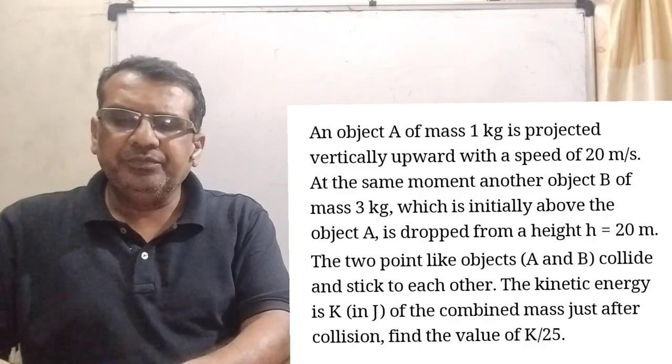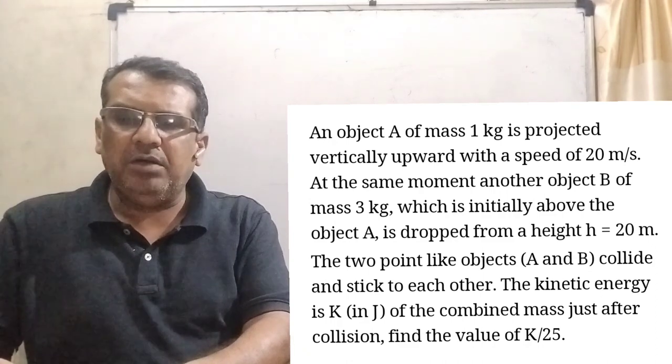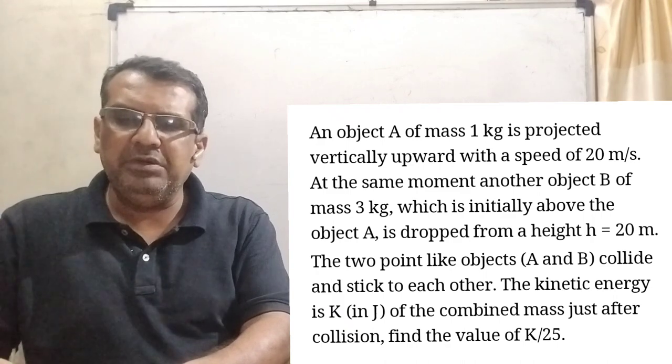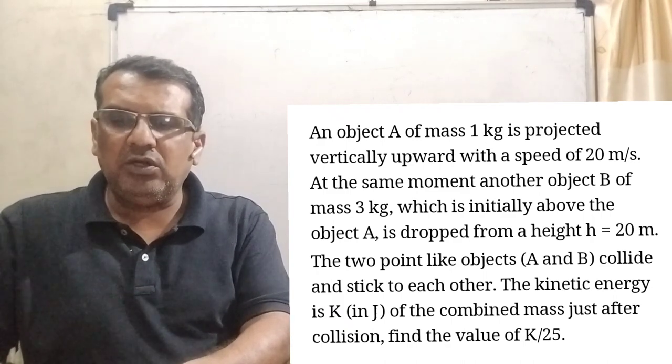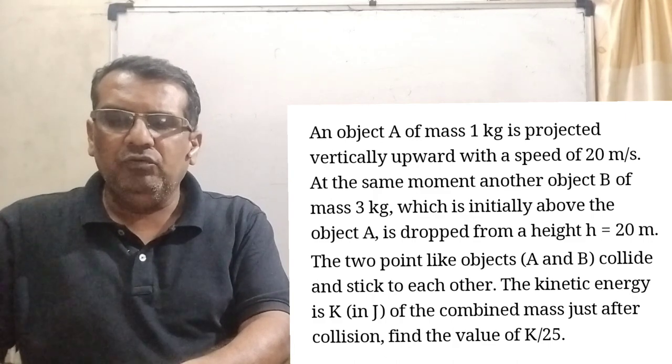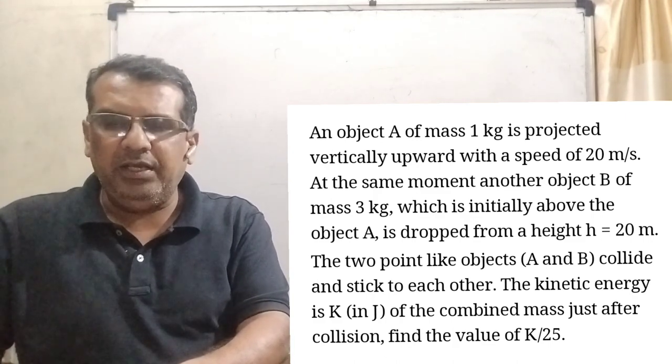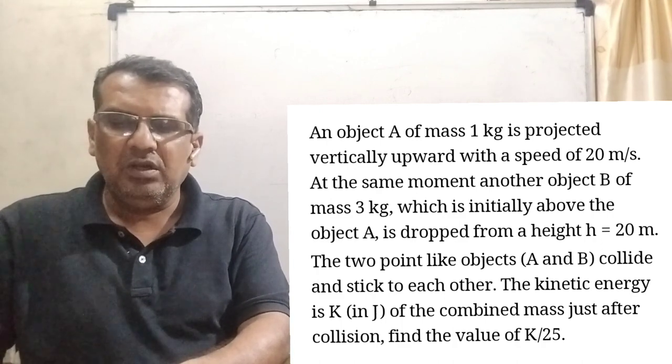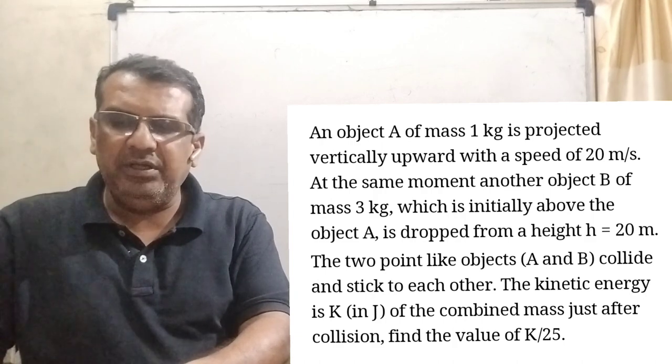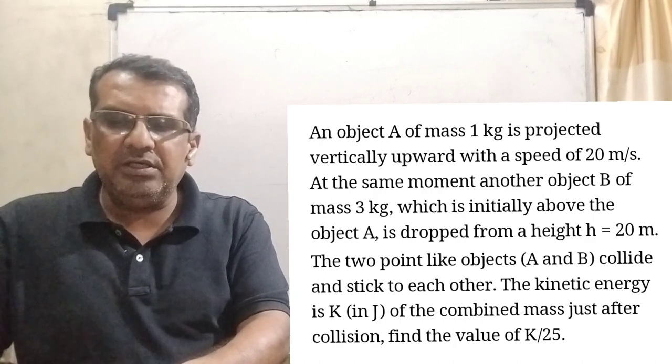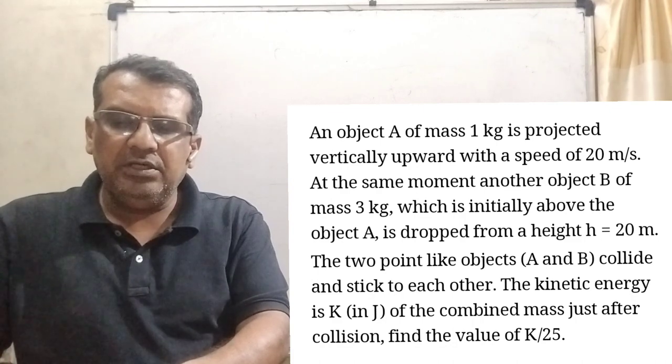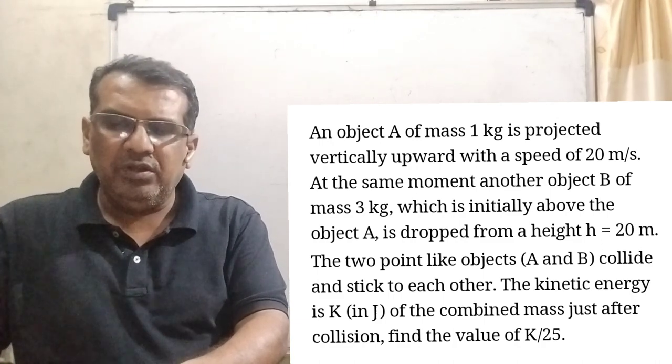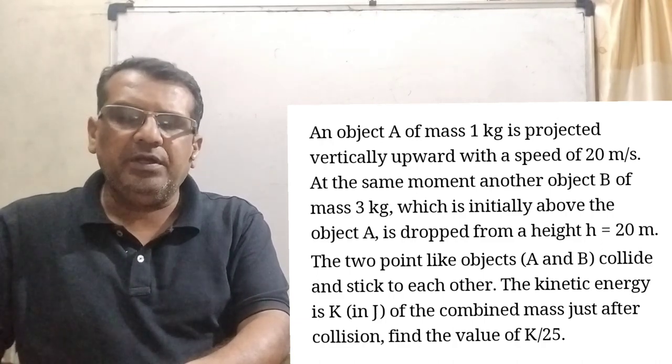Now here is the question. An object A of mass 1 kilogram is projected vertically upward with a speed of 20 meter per second. At the same moment, another object B of mass 3 kilogram, which is initially above object A, is dropped from a height h equal to 20 meter. The two point-like objects A and B collide and stick to each other. The kinetic energy is k in joules of the combined mass just after collision. Find the value of k by 25.